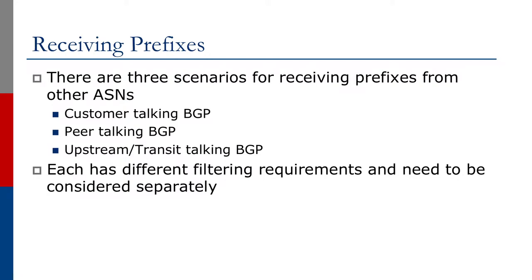We are now going to talk about the best practices for receiving prefixes. There are three scenarios for receiving prefixes from other ASNs. The first one is using BGP to talk to your customers. The second scenario is when BGP is needed to talk to peers. Finally, the third scenario is using BGP to talk to your upstream or transit provider. Each has different filtering requirements and needs to be considered separately.